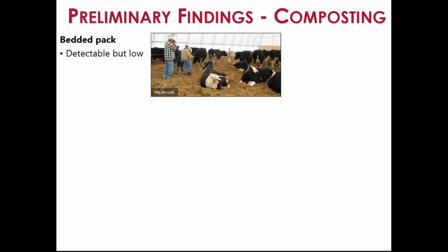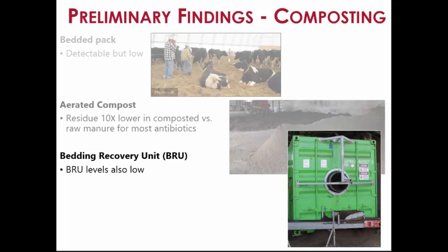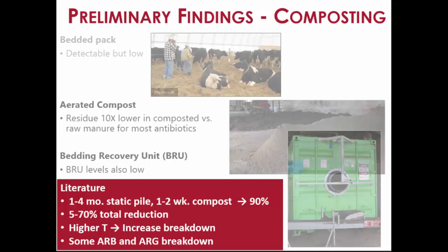We are seeing detectable levels of tetracyclines and sulfonamides in manure, trace levels of macrolides, and positive detections of cephalosporins. In bedded packs, antibiotic levels tend to be low, possibly due to dilution from bedding. In aerated compost, levels actually tend to drop from what they are in raw manure — so that process could be promising. We're also seeing lower levels in rotary drum composting units. Based on the literature, it can take a few months for antibiotic levels to drop 90 percent, though more aggressively managed composting could achieve this in a couple of weeks.